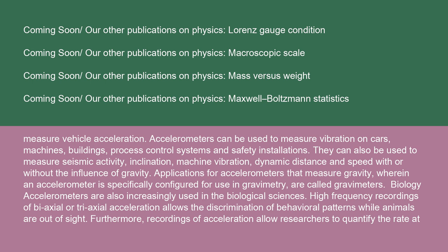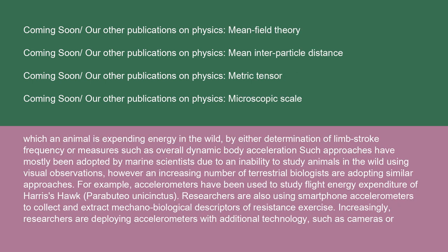Accelerometers are also increasingly used in the biological sciences. High-frequency recordings of biaxial or triaxial acceleration allow the discrimination of behavioral patterns while animals are out of sight. Furthermore, recordings of acceleration allow researchers to quantify the rate at which an animal is expending energy in the wild, by either determination of limb stroke frequency or measures such as overall dynamic body acceleration. Such approaches have mostly been adopted by marine scientists due to an inability to study animals visually in the wild. For example, accelerometers have been used to study flight energy expenditure of Harris's hawk (Parabuteo unicinctus).